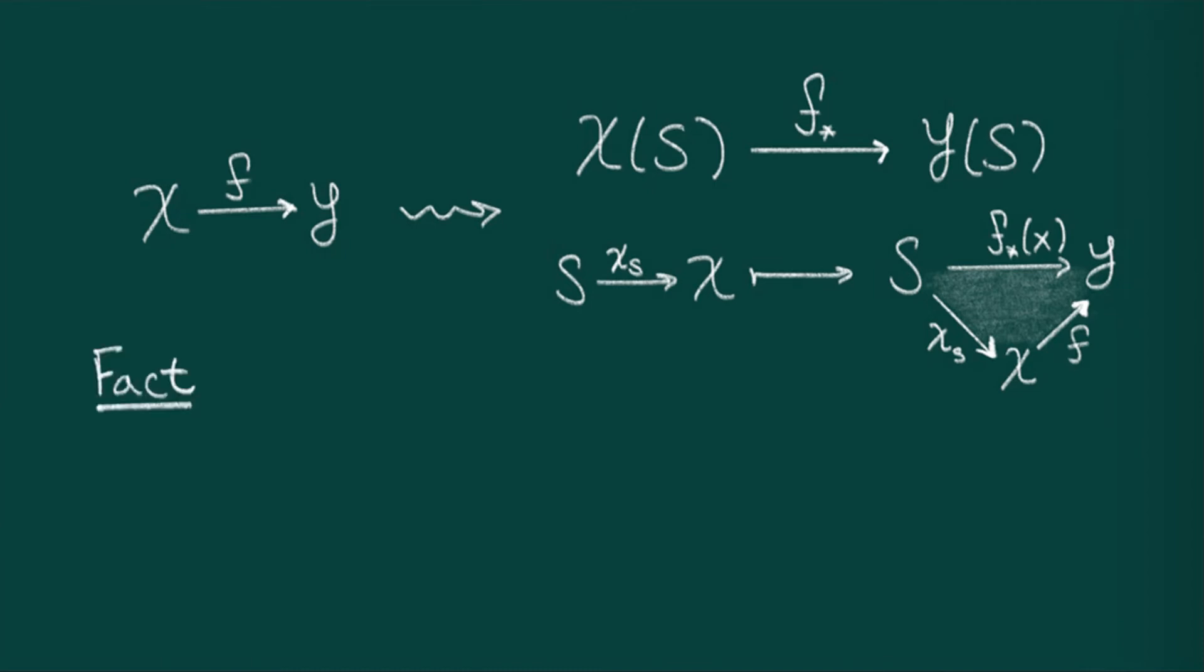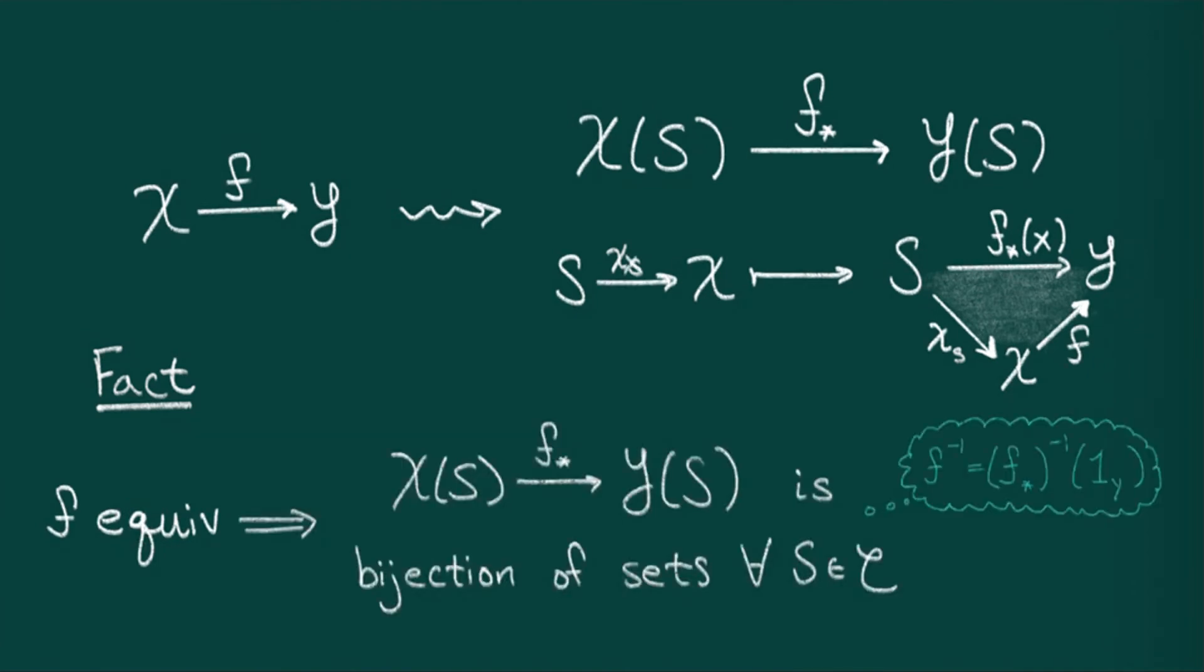The following lemma states that every equivalence f gives a dictionary between s-points. In other words, every equivalence f from x to y gives a bijection between the s-points of x and the s-points of y. As an exercise, see if you can show that the inverse of f is the inverse of the push-forward of f, which, recall, takes s-points of y to s-points of x, evaluated at the identity of y.